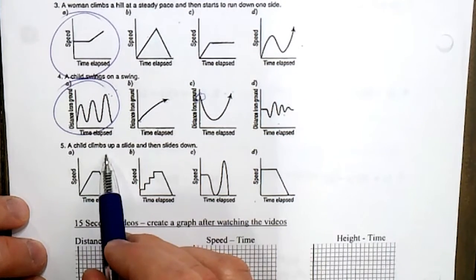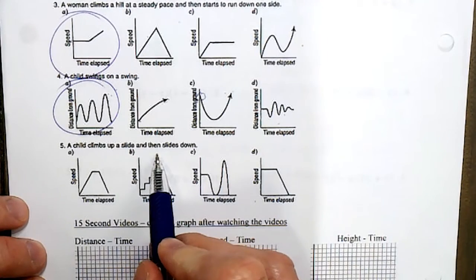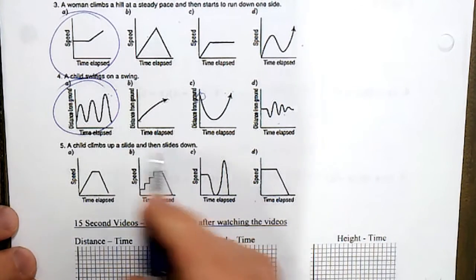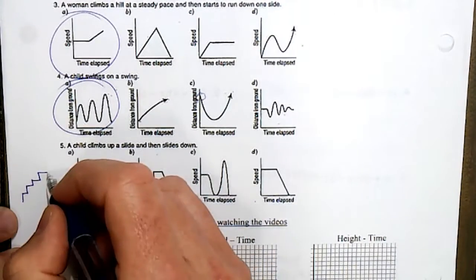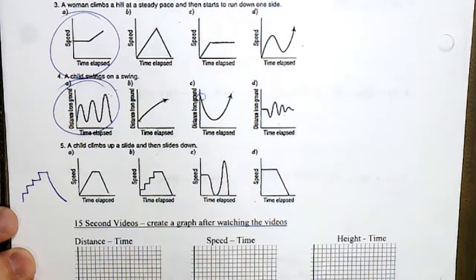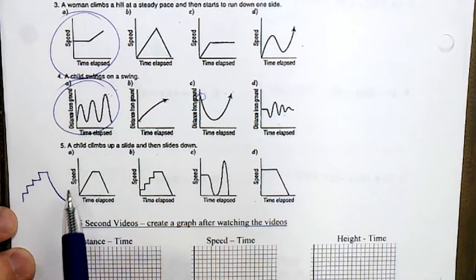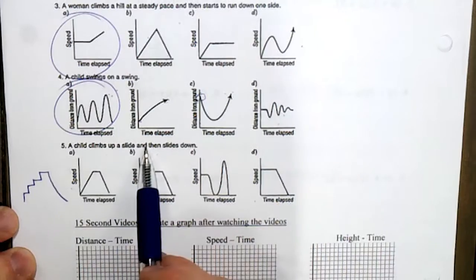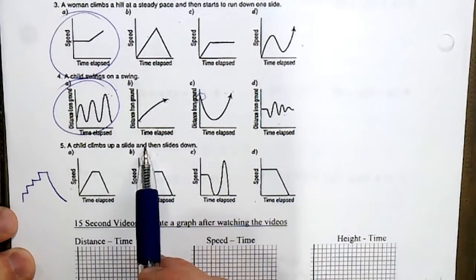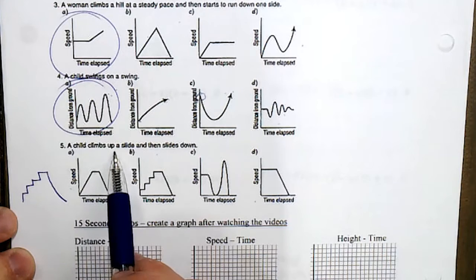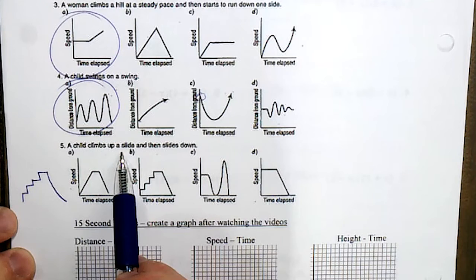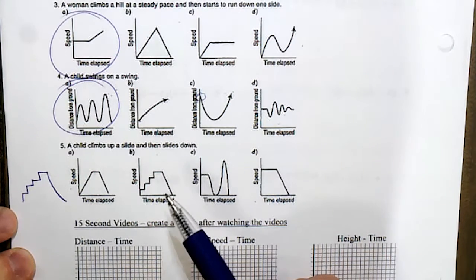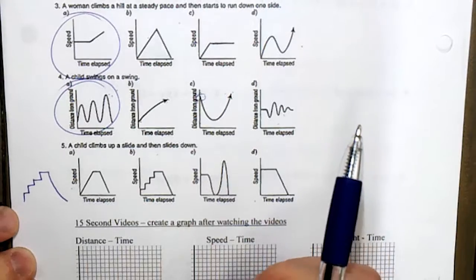And the child climbs up a slide and then slides down. So picture it - you've got a slide, you probably go up stairs and then you slide down. But the thing is, this graph has speed, so we have to be careful with that one. How fast is she going up and then down? She's probably going at a pretty steady pace going up the stairs, but not too fast. She gets to the top, she probably pauses, she might have to set herself down, and then she'll start slow and speed up as she hits the bottom of the slide.